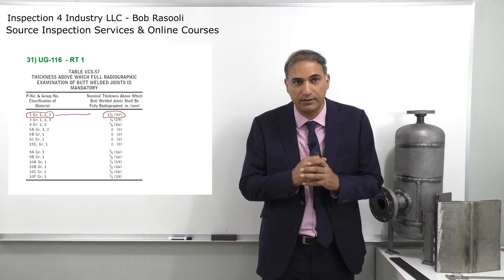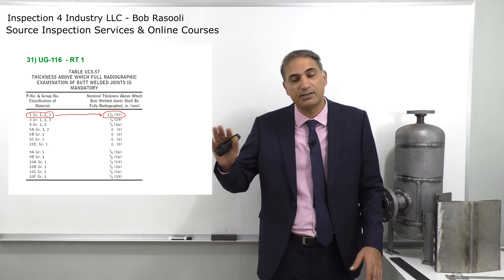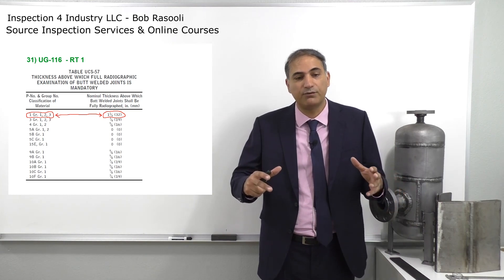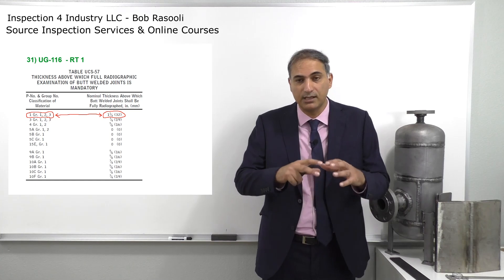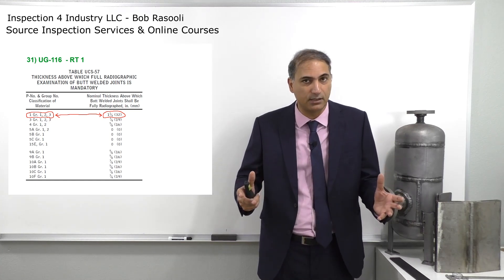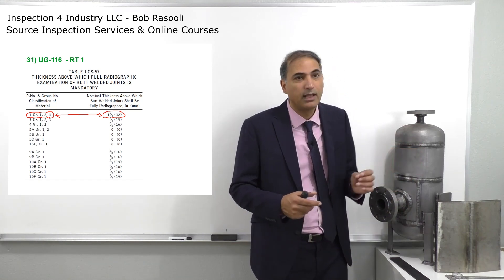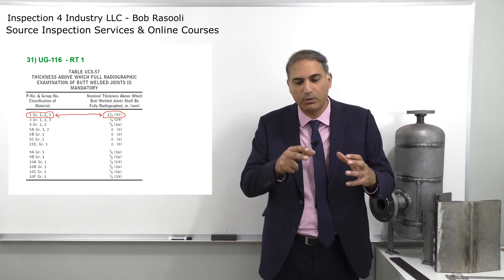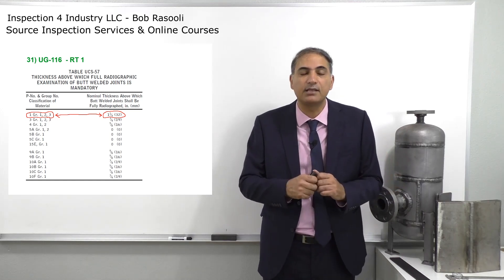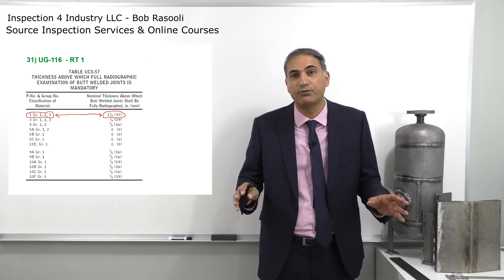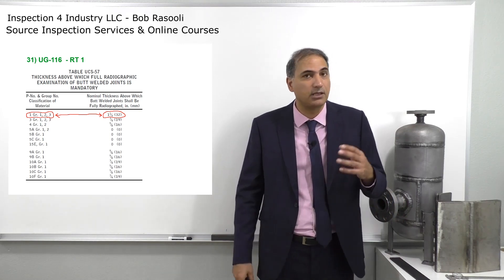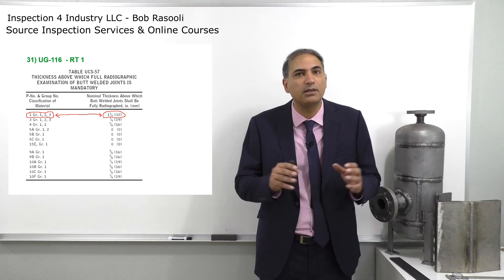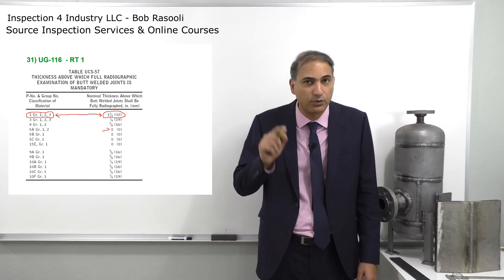Table UCS-57 shows that P-number 1 represents carbon steel, as grouped by ASME Section IX. Section IX groups materials by weldability, chemical composition, and mechanical properties. P-number 1 materials are normally carbon steel. For carbon steel P-number 1, group numbers 1, 2, and 3 — all subgroups — if thickness is less than 1-1/4 inch, full radiography is not required, but above 1-1/4 inch it is required. For P-number 5A, the value shown is zero, meaning regardless of wall thickness, full radiography is always required for that material.